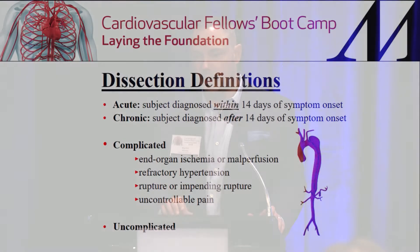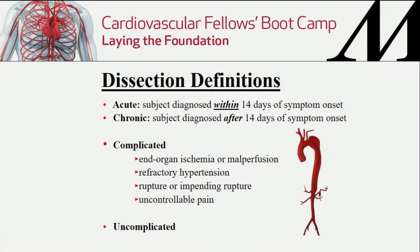Acute means the subject is diagnosed within two weeks of symptom onset. Chronic is after two weeks. There's a subacute period within three months that some people write about. Complicated or uncomplicated: complicated means they have evidence of malperfusion, refractory hypertension, rupture or impending rupture, and then the gray zone area is the patient with uncontrollable pain.